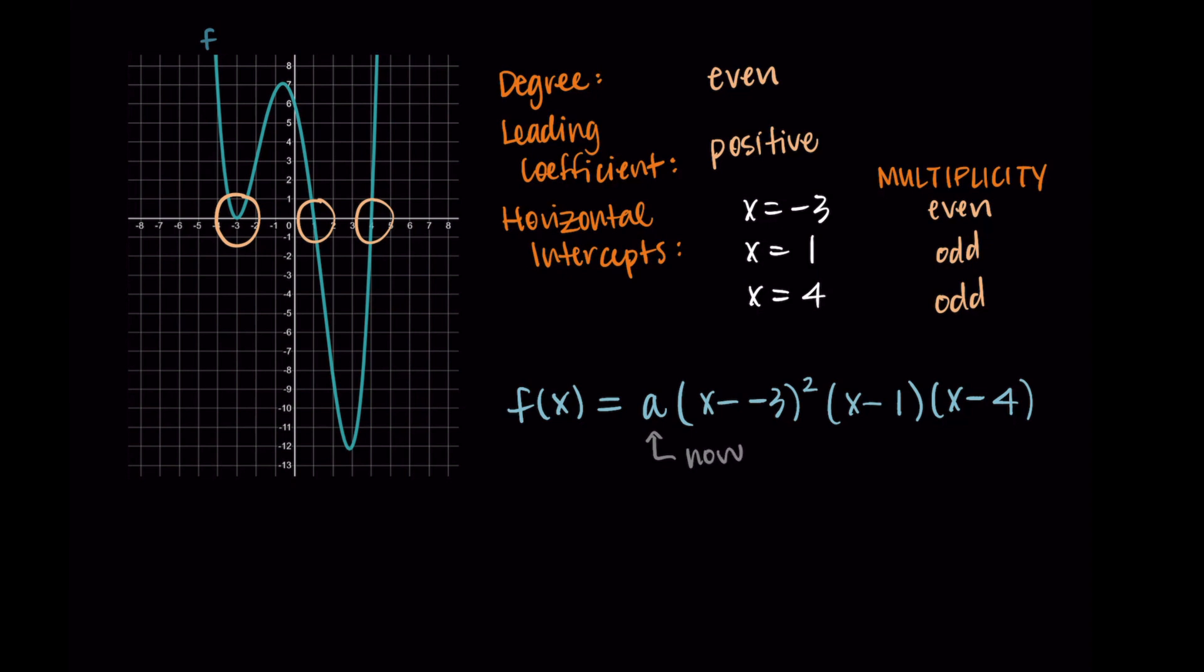All right, so we have our potential equation. Now we just need to find a. This is the same process we use when we're finding a for a quadratic. We're going to take a point we know on the function and substitute it in, then solve for a. Here I see the point zero comma six is on my function, so I'm going to substitute in zero for x and then set it equal to six.